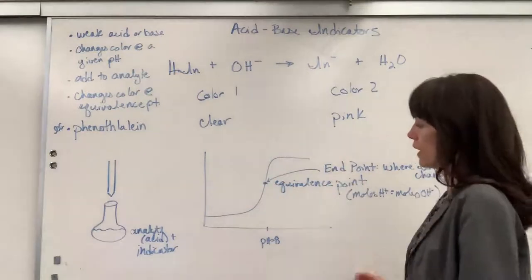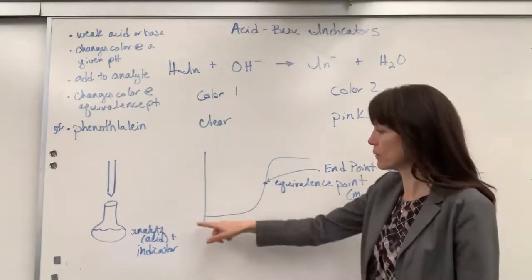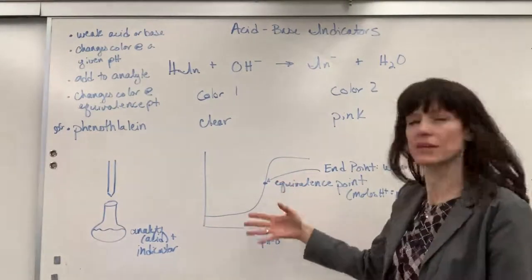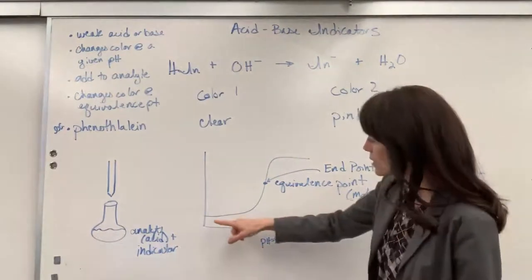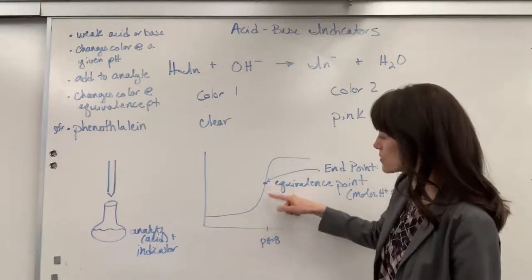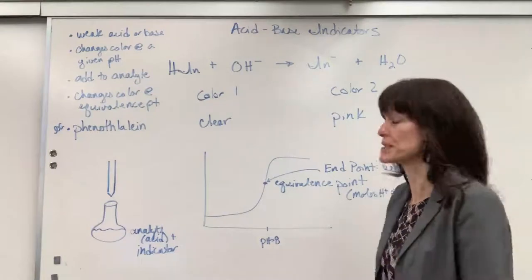Now where this is on our titration curve. So I am using the example of a weak acid being titrated with a strong base. Our pH, the equivalence point, is going to be above 7. So in this case, our pH, that equivalence point, notice I put pH equals 8, just trying to indicate above 7.